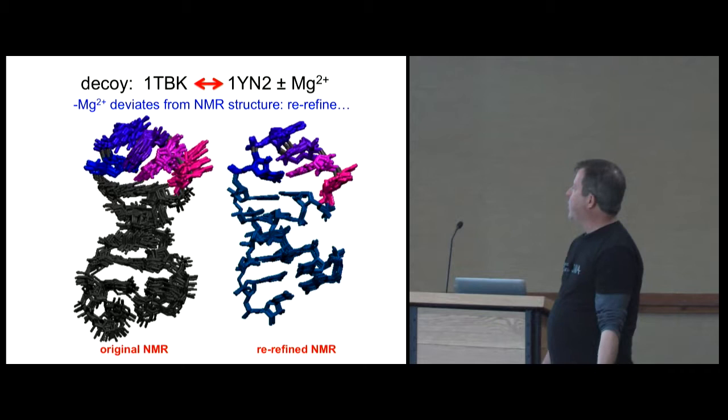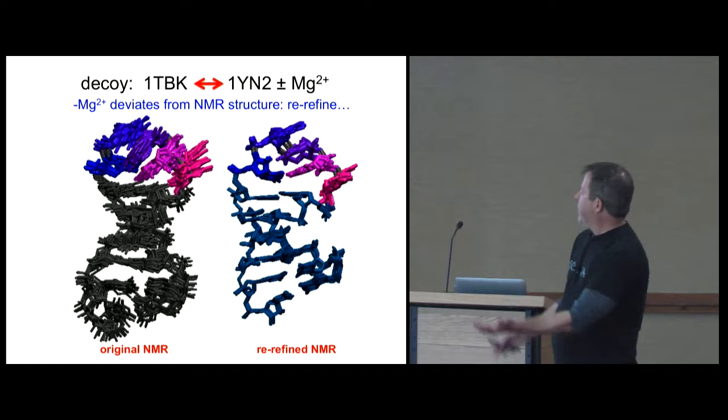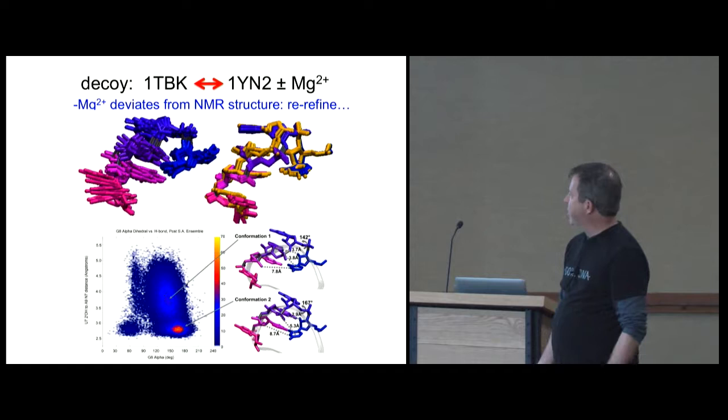Another example, two structures are known for this particular RNA sequence. One's a structure in the presence of magnesium, one's in the absence. The original NMR showed kind of a wide range of structures that satisfied the restraints. When we re-refined the NMR, we got a very tight structure, and we were able to show in simulation spontaneously we could add magnesium and convert to a magnesium bound structure. And it turns out that the magnesium free kind of samples between two conformations, and the magnesium locks it into one. And so that was kind of exciting.